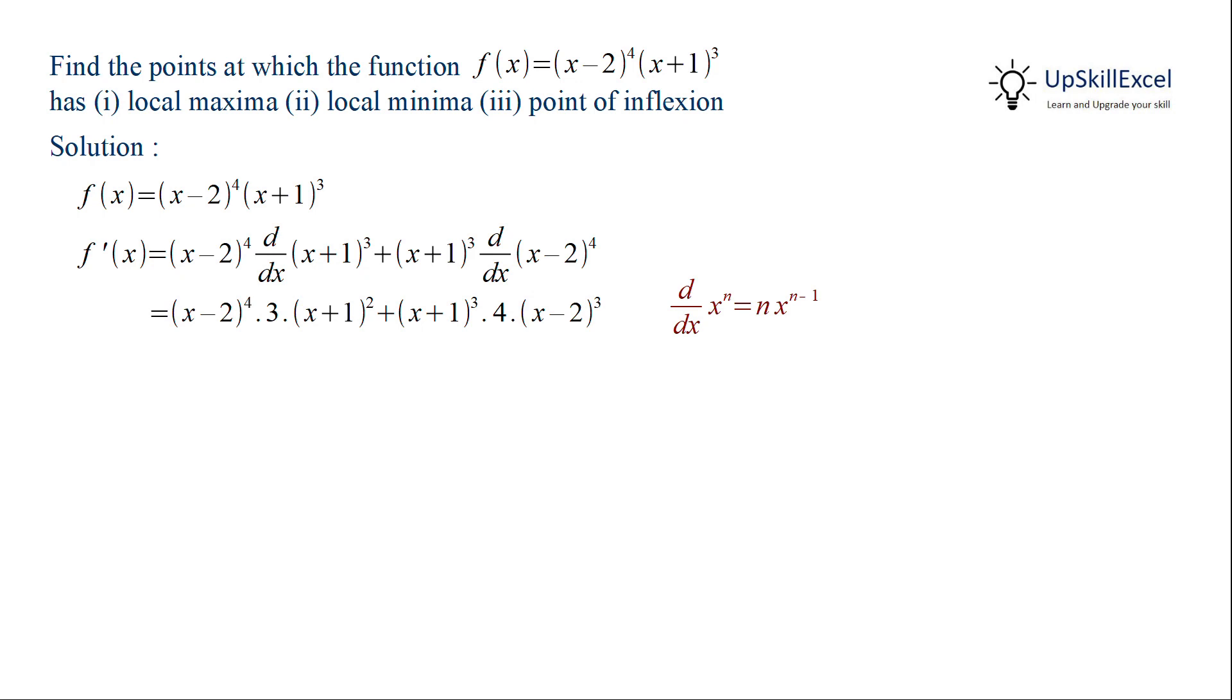We can take (x-2)^3 and (x+1)^2 common and then aggregate the remaining terms. Doing the simplification, we get 7x - 2.